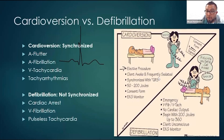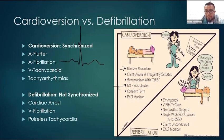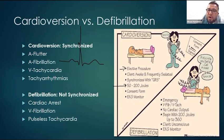It's synchronized with the R wave and the QRS. The electrical jolt is usually less than defibrillation, usually anywhere from 50 to 200 joules. Joules is the unit of measurement we use to measure the electrical component of the shock. We also need a consent form and we do ECG monitoring. That is cardioversion.